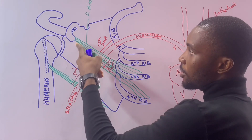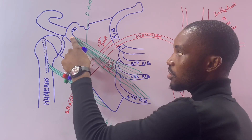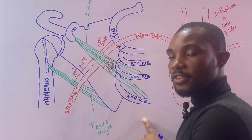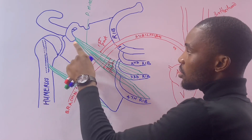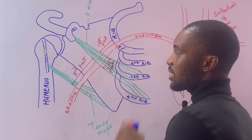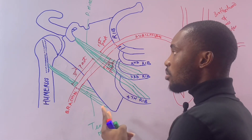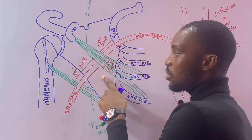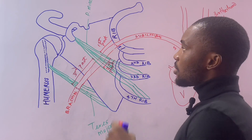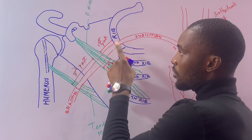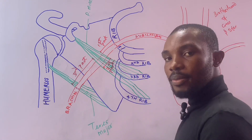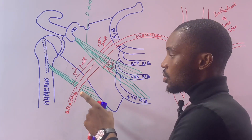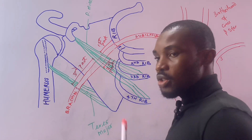There is a muscle called the pectoralis minor running from the coracoid process to insert into the third, fourth, and fifth ribs, running anteriorly over the second part of the axillary artery. The first part is from the outer border of the first rib to the upper border of pectoralis minor, the second part is behind pectoralis minor, and the third part is from the lower border of pectoralis minor to the lower border of teres major.